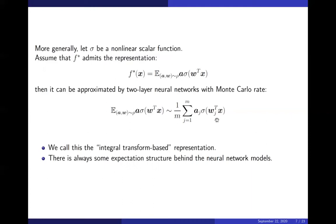This extends to general nonlinear scalar activation functions sigma. If F* is given by an expectation of the form involving a general nonlinear sigma, the same argument shows F* can be approximated by a two-layer neural network with a convergence rate matching Monte Carlo. We call this representation an integral transform based representation of F*.